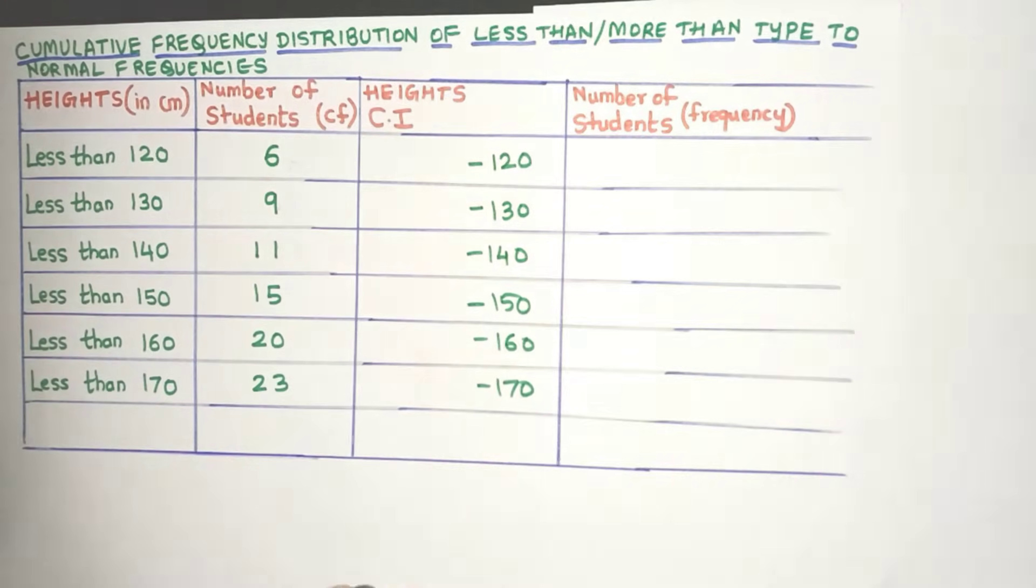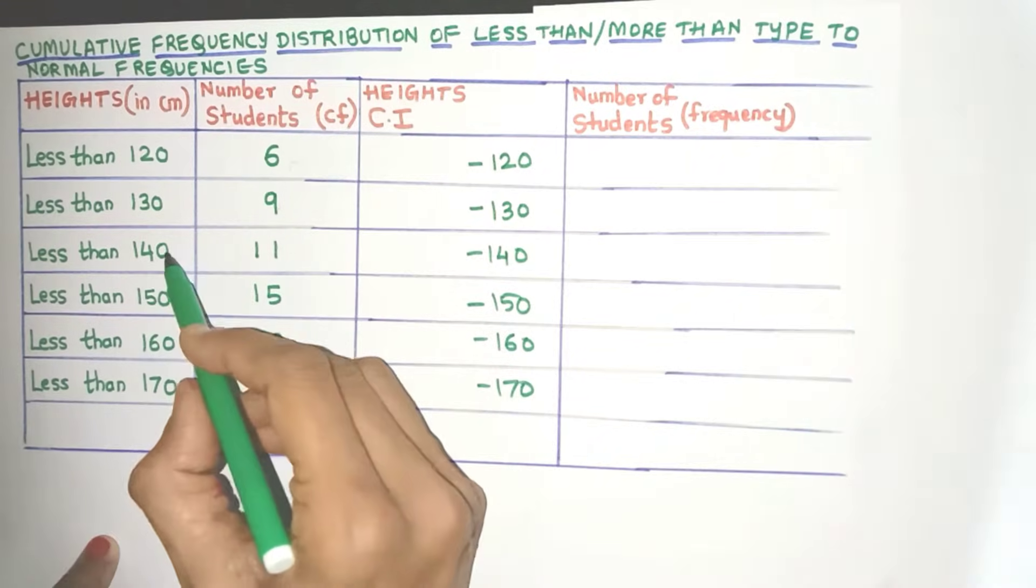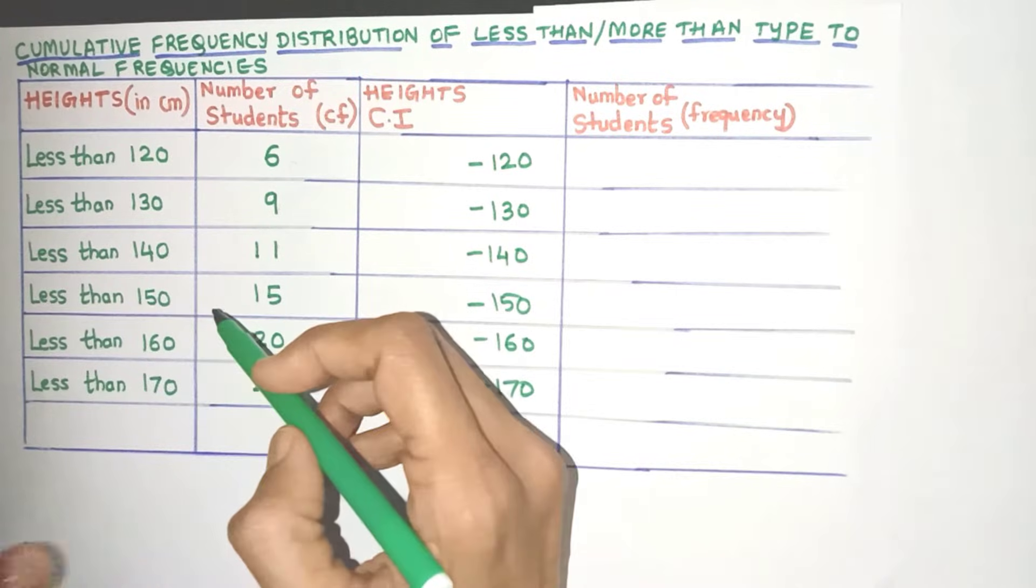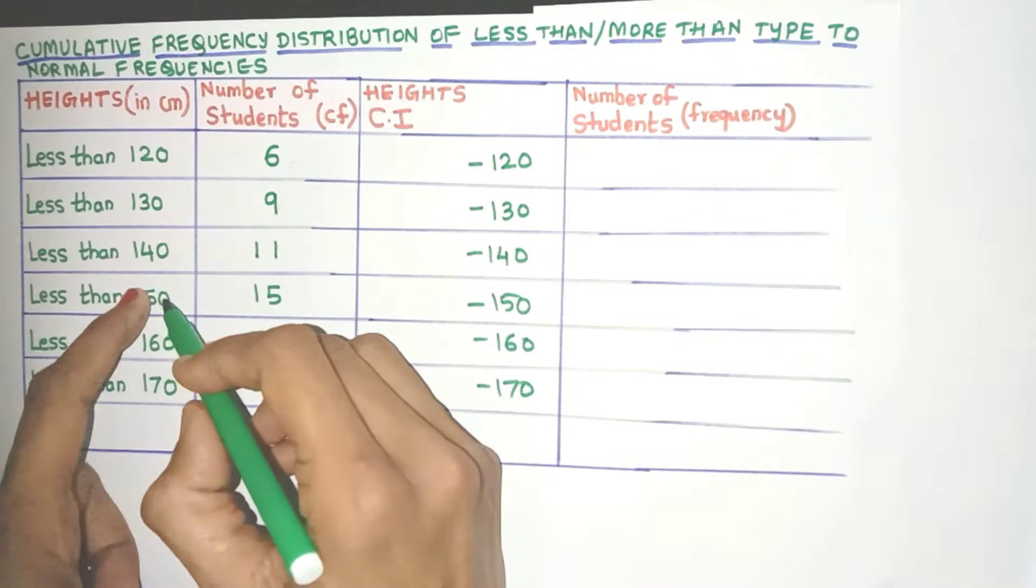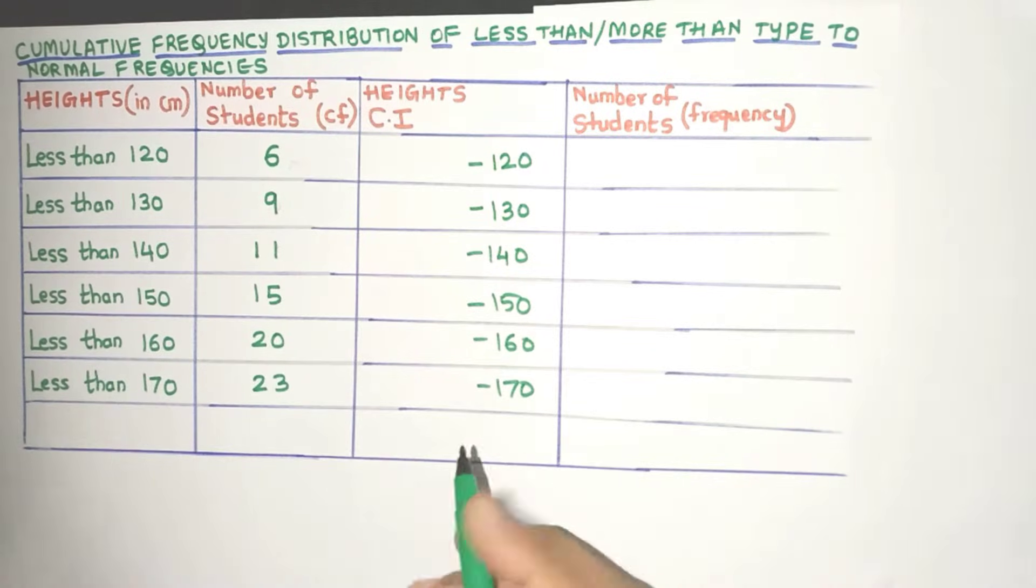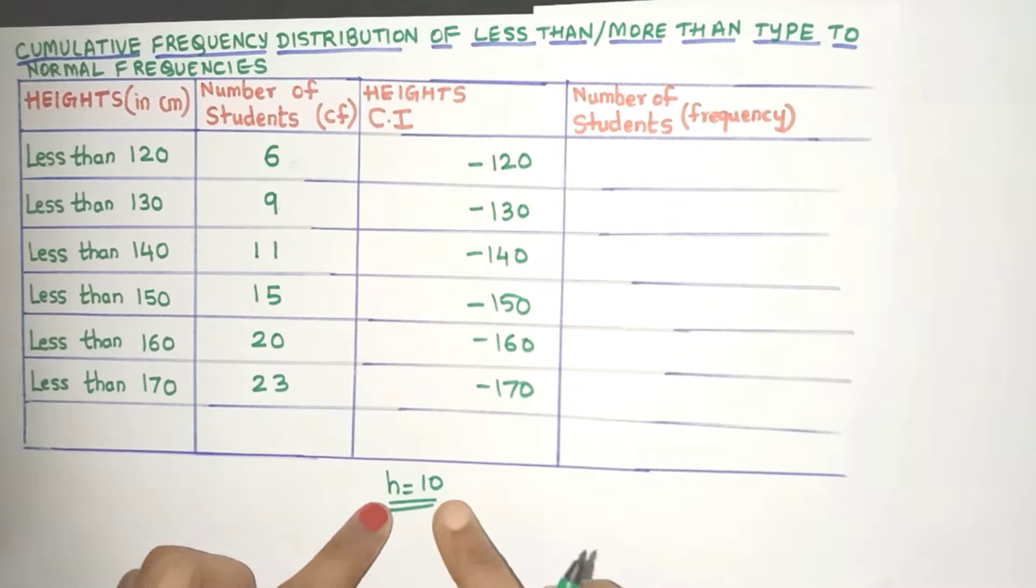But what about the lower class limits? Now for that, just observe the gap between these two numbers. See 150 to 160, the gap is 10. That means after 10, the next row is starting. So what is this 10? Yes, it is the class size.